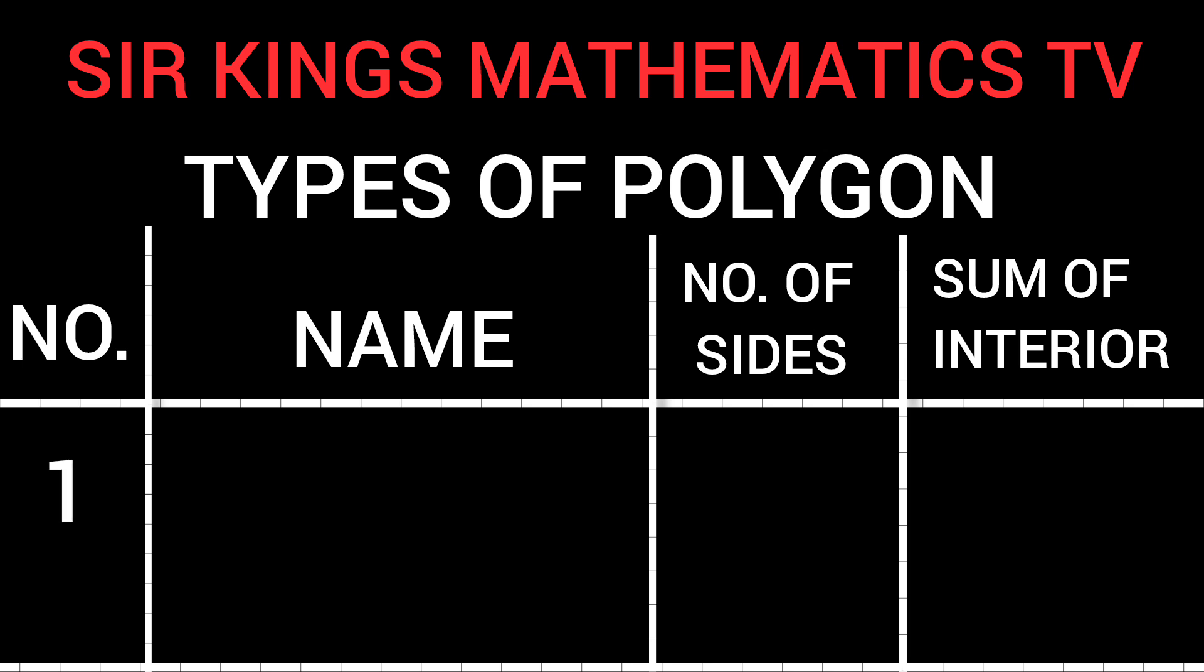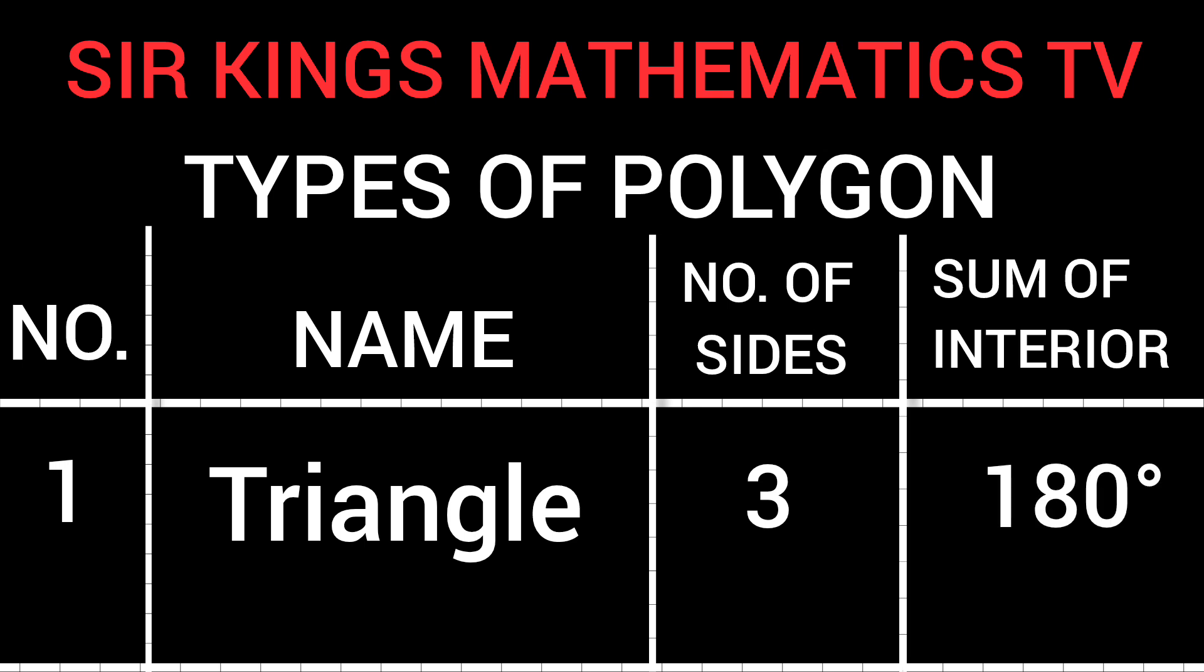Triangle: Number of sides 3. Sum of interior angles 180 degrees.